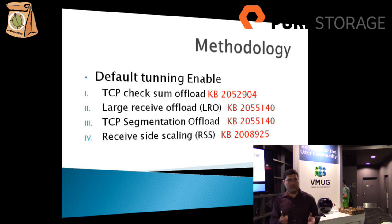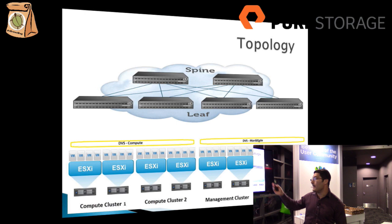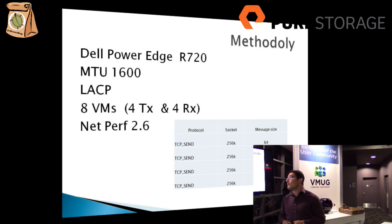The topology is a standard leaf-spine layer 3 fabric, and we designed the NSX environment according to VMware reference best practices. We have four clusters: two compute clusters, one management cluster, and one edge cluster. The servers we used are Dell R720s with 10 gigabit cards each.